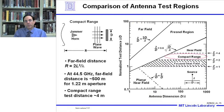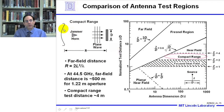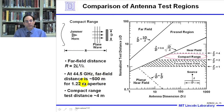This slide compares antenna test regions. Testing was done in a compact range located two to four aperture diameters from the antenna under test. The horn antenna feeding the compact range is assumed to be the jammer, and the compact range produces a plane wave incident on the multiple beam antenna under test. The conventional far-field distance R equals 2L² over lambda; at 44.5 GHz this would be 500 meters for this 1.22-meter aperture, whereas the compact range test distance is only 4 meters.